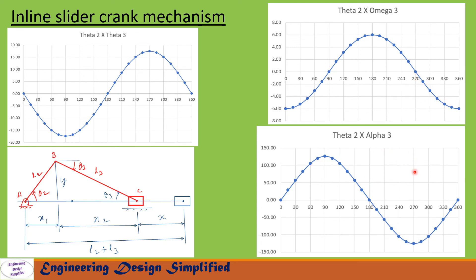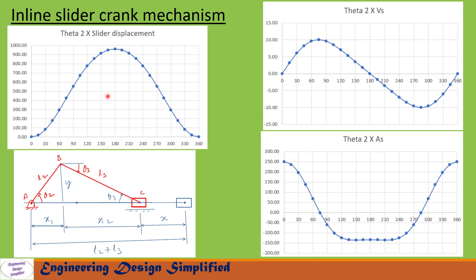In the theta2 vs. alpha3 graph, alpha3 is positive from 0° to 180° and negative from 180° to 360°. It reaches its maximum positive value at theta2 = 90° and maximum negative value at theta2 = 270°. In the theta2 vs. slider displacement graph, displacement is 0 at 0°, maximum at 180°, and returns to 0 at 360°.